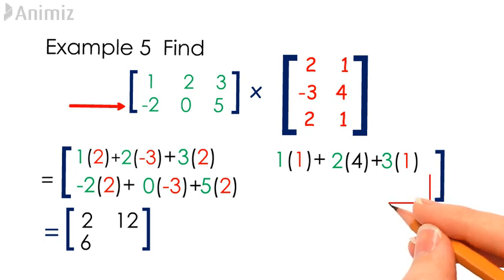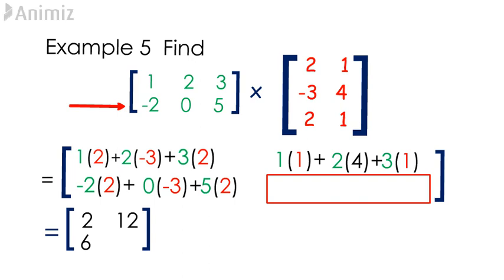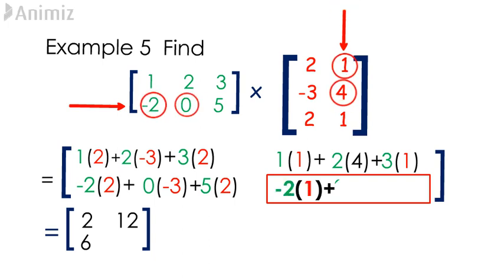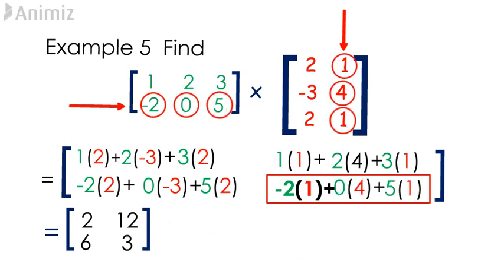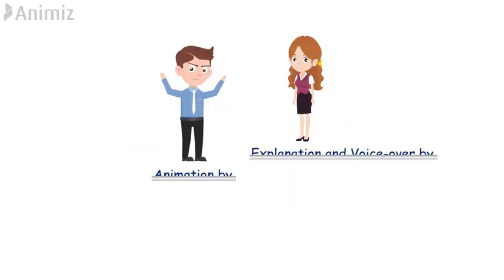For the (2,2) element of the resulting matrix, add the multiplication outcome of elements from the second row of the first matrix to the elements from the second column of the second matrix. Negative 2 times 1 plus 0 times 4 plus 5 times 1 gives us 3, which is the (2,2) element of the resulting matrix. Therefore, the resulting matrix obtained here is [[2, 12], [6, 3]].